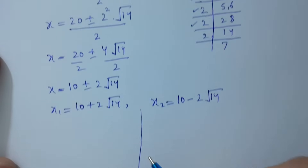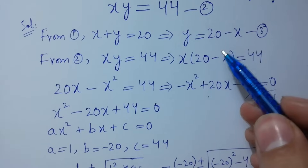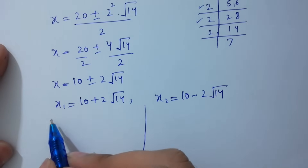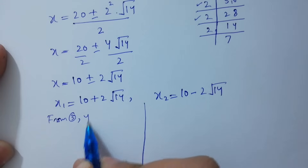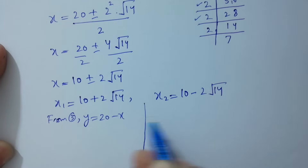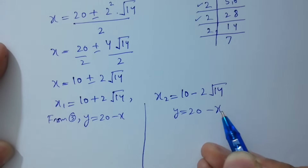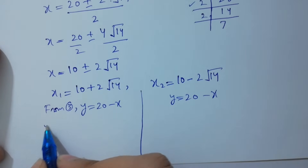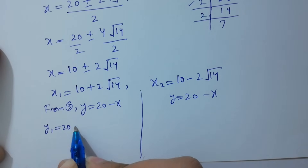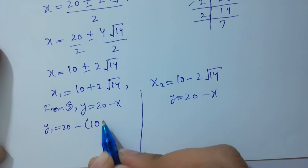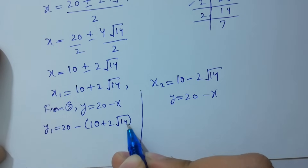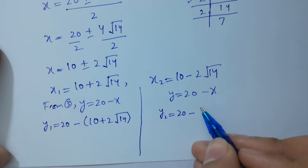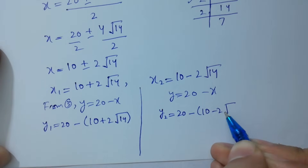As we know, y equal to 20 minus x from the third equation. So y1 equal to 20 minus x1, which is 20 minus (10 plus 2 square root of 14), giving y1 equal to 10 minus 2 square root of 14. And y2 equal to 20 minus x2, which is 20 minus (10 minus 2 square root of 14), giving y2 equal to 10 plus 2 square root of 14.